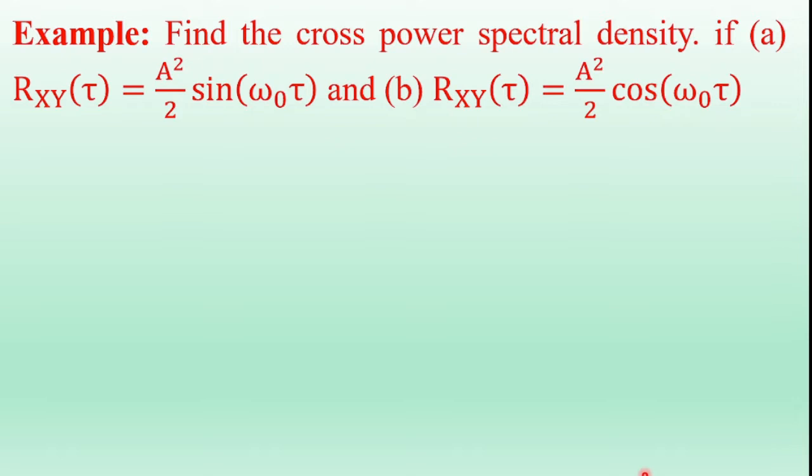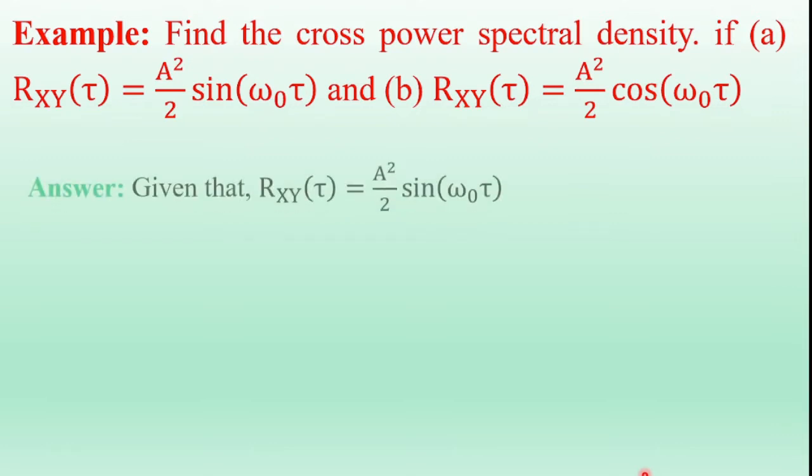Find the cross-power spectral density if: first part is Rxy of tau equals a-squared over 2 times sin of omega-naught tau, and the second part is Rxy of tau equals a-squared over 2 times cos of omega-naught tau.